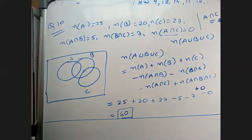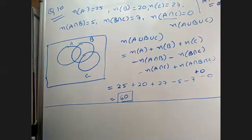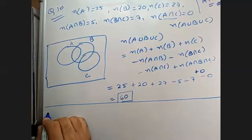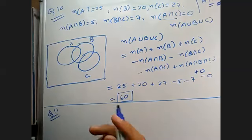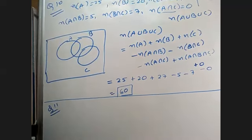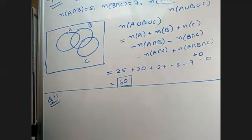After question 10 we have questions 11, 12, 13, and 14. Now see question number 11: such that A intersection B, B intersection C, and A intersection C are non-empty, and A intersection B intersection C is defined.